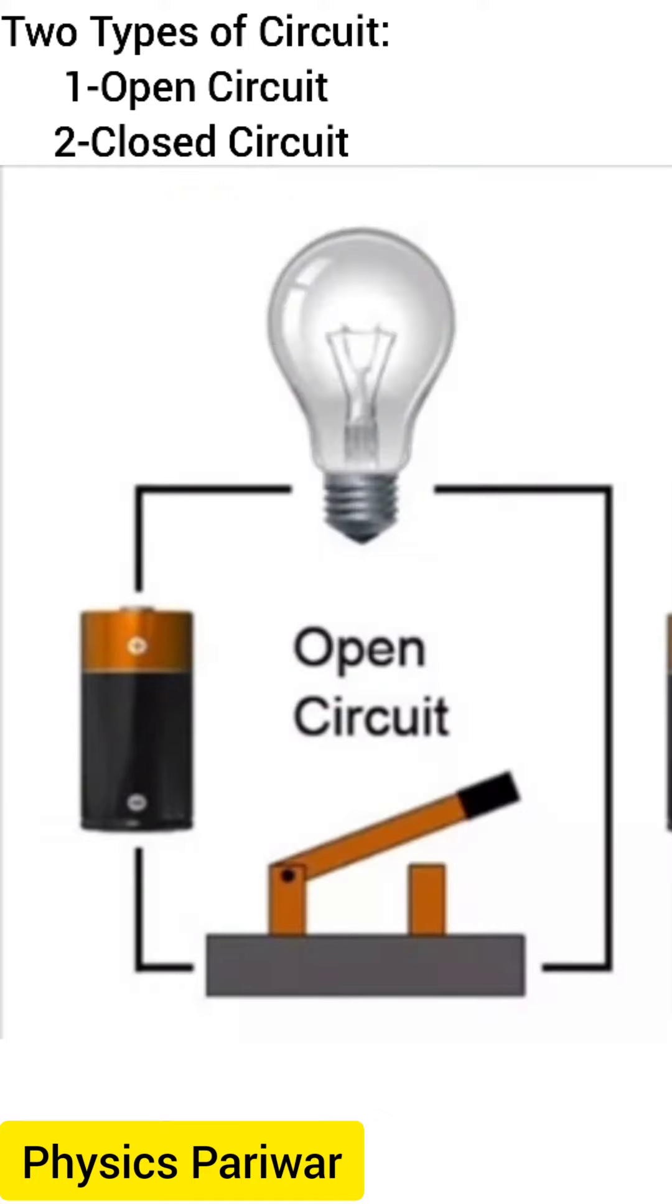Open circuit is where the continuity has been broken by an interruption in the path for current to flow. It is called open circuit.